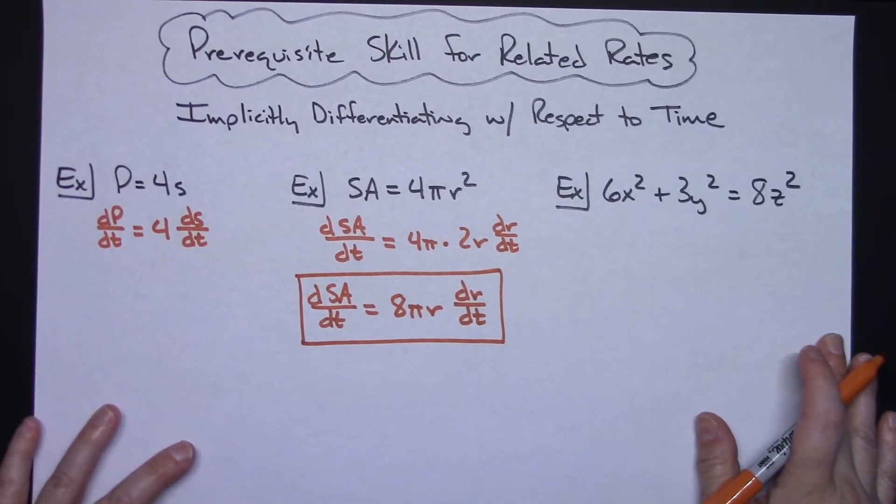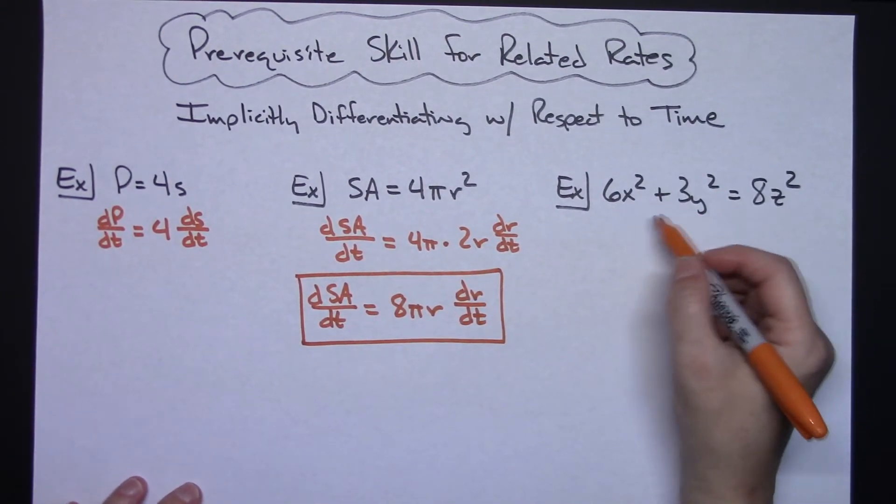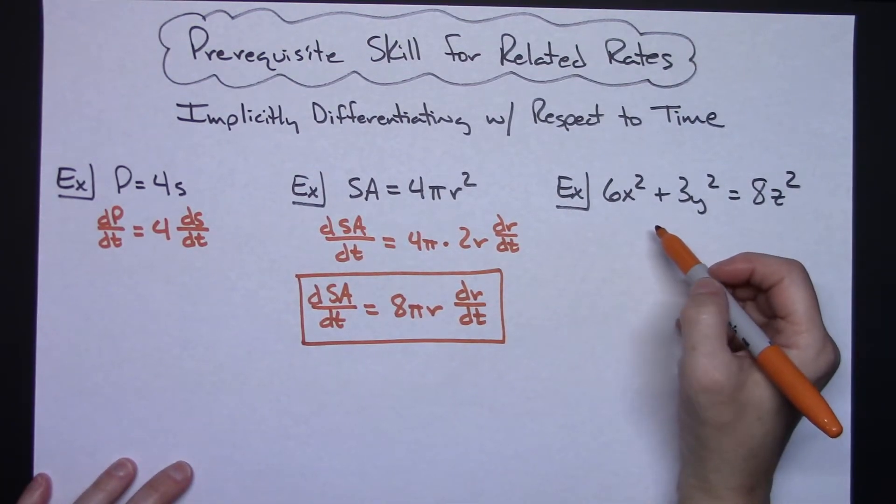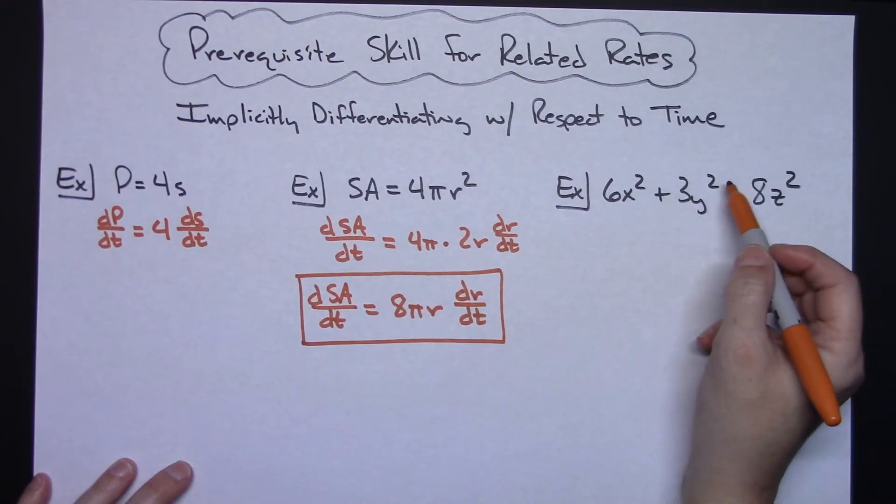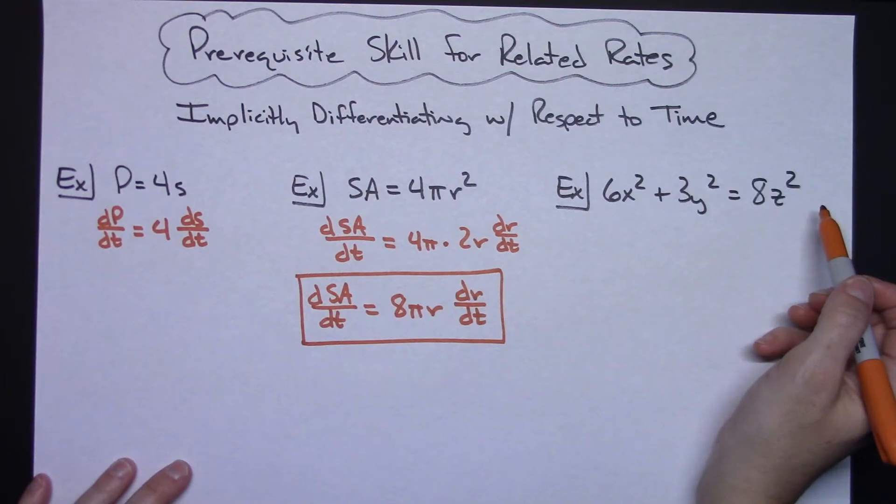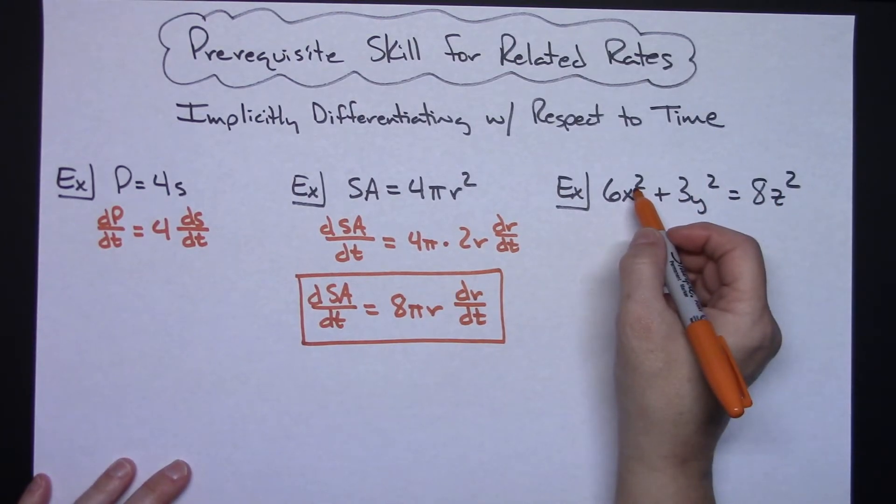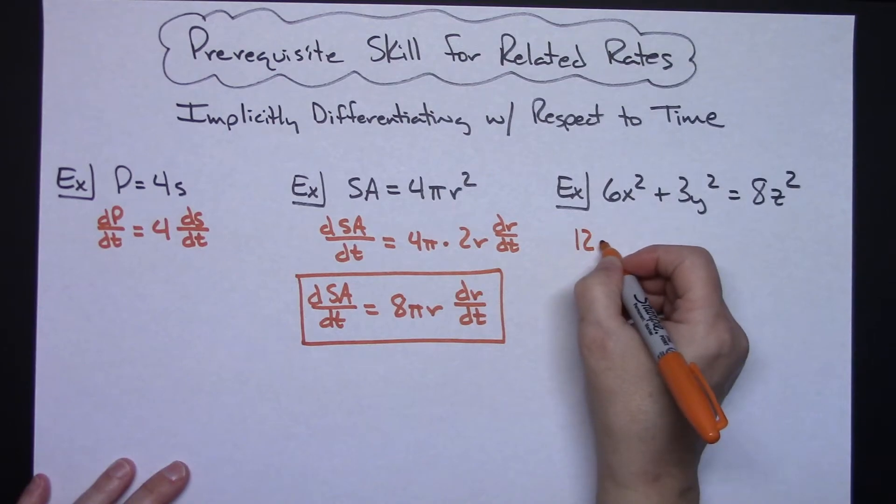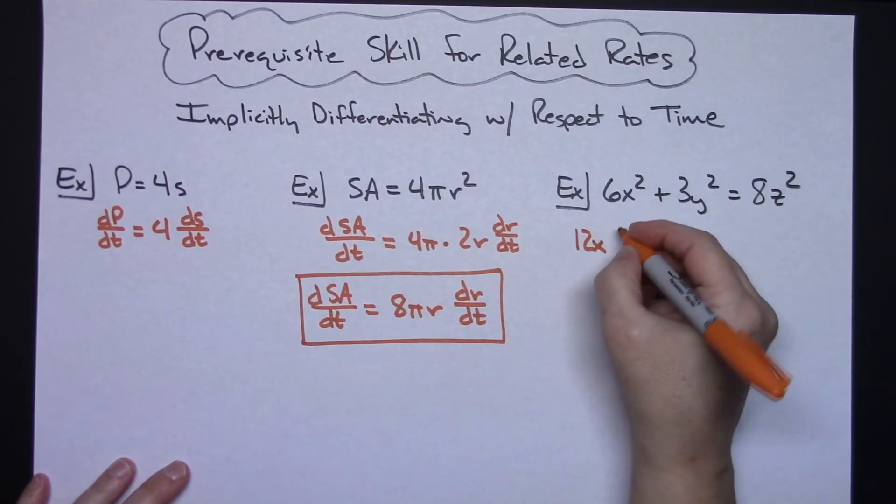In this last one, this is a typical equation that you're also going to see in related rates problems as well. Basically it's 6x² + 3y² = 8z². I'm going to differentiate each one of them. So we're going to differentiate this, pull that 2 down there. So then I'm going to have a 12x now with respect to time, dx/dt.